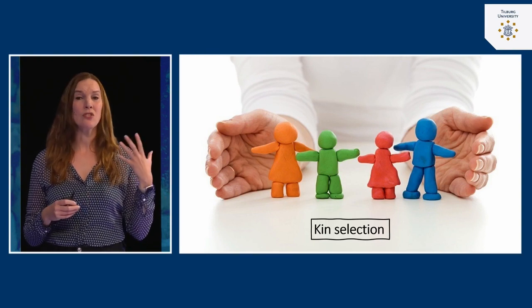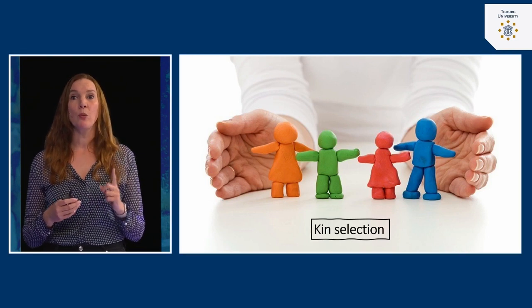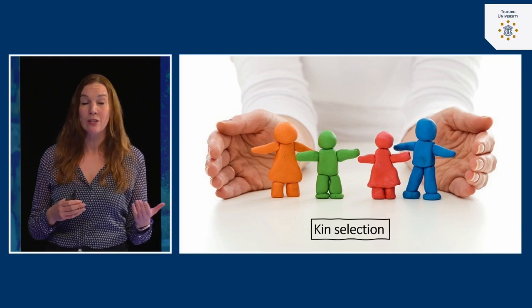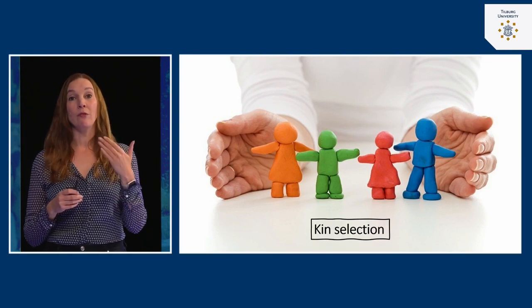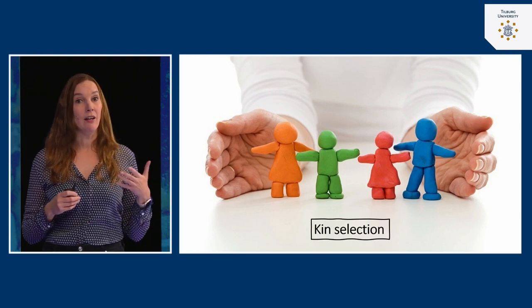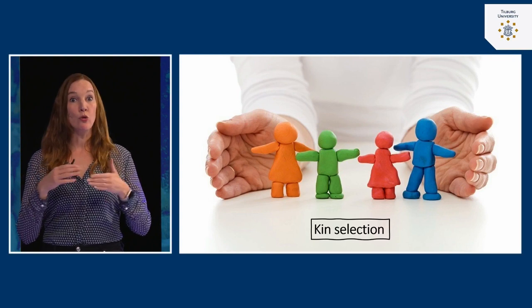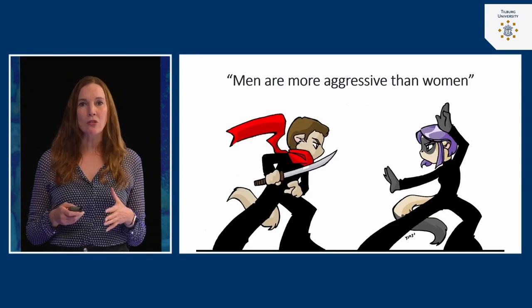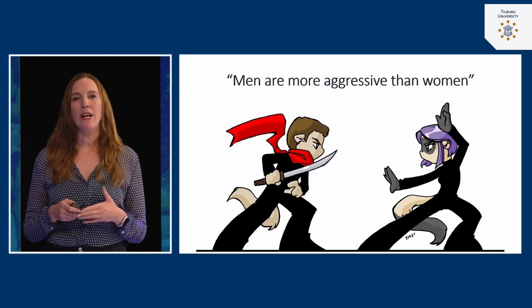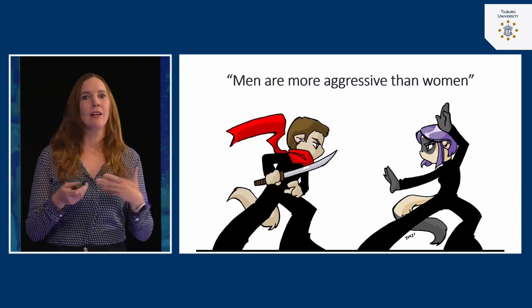According to evolutionary psychology and kin selection, males are more physically aggressive than females — first because they want to establish dominance over other males, and also to ensure their paternity. This helps explain why males are more aggressive when a female is sexually unfaithful. This aligns with the general stereotype that males are more aggressive than females — in contrast to helping behavior, where women tend to be more helpful.